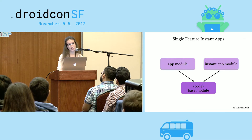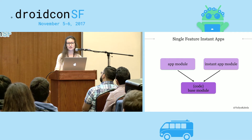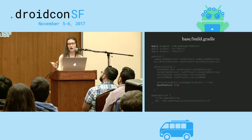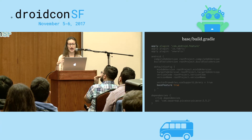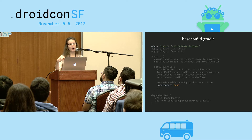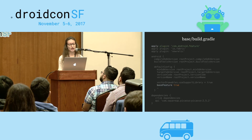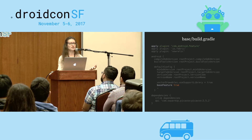Currently we have three modules, so there should be connections between them, specified in our build.gradle files. In the Base Module's build.gradle, you have to specify the plugin com.android.feature, and in the default config closure, set the attribute base feature to true. This is because all our business logic is located in the Base Module — it is the center of your application that other modules refer to. In the dependencies block, you specify regular dependencies as you would normally in your App Module.